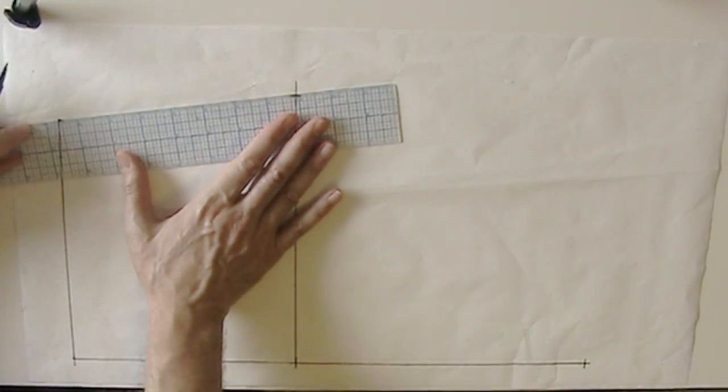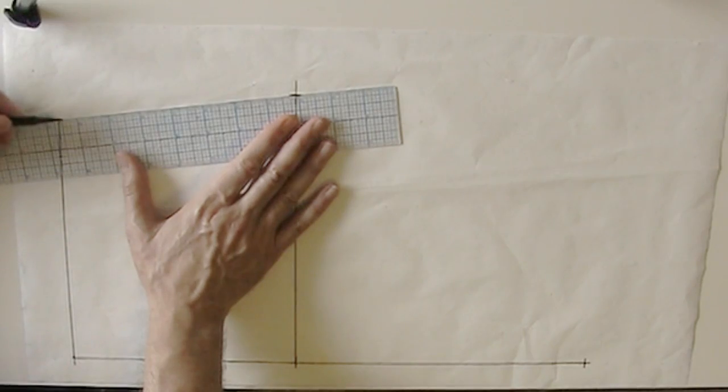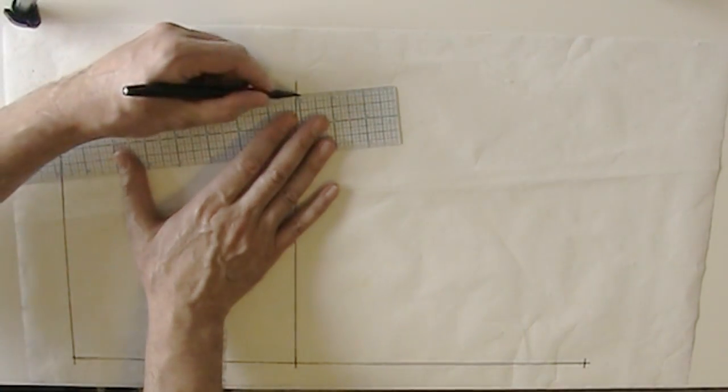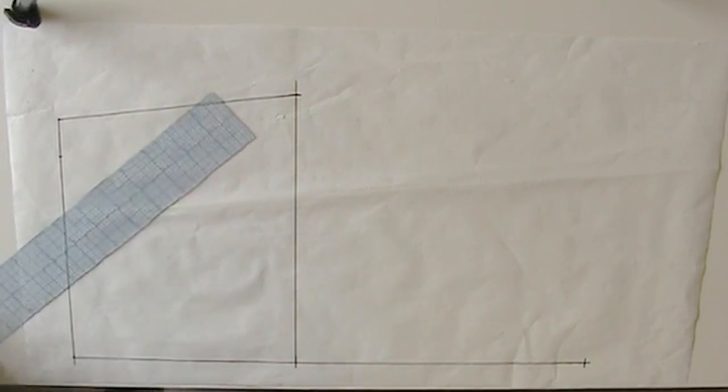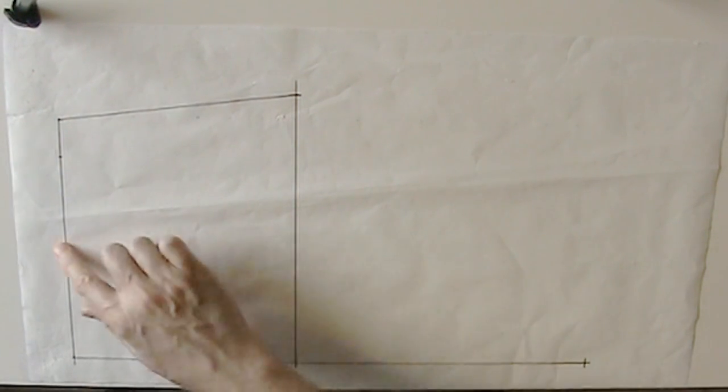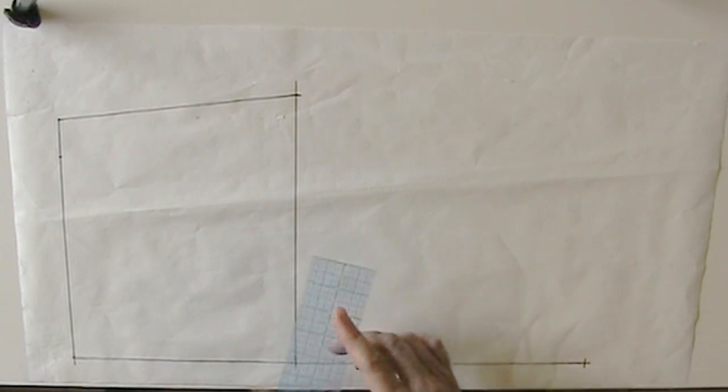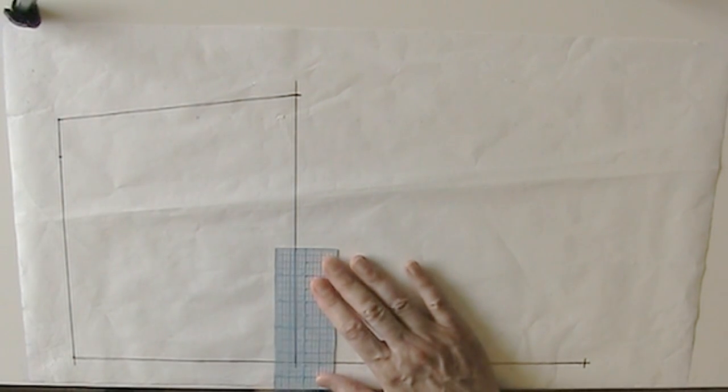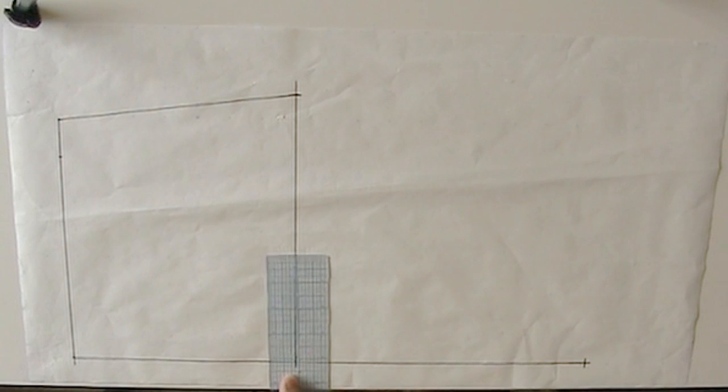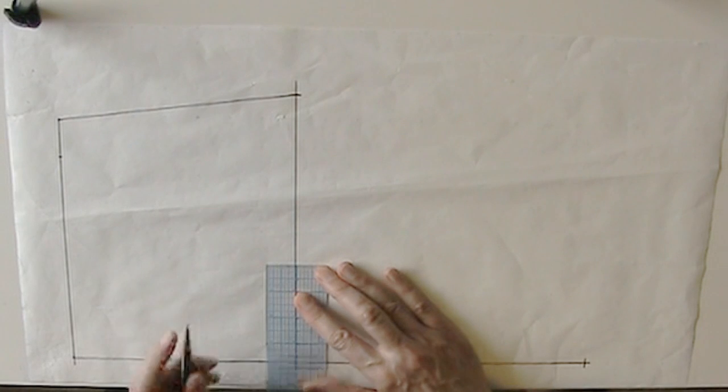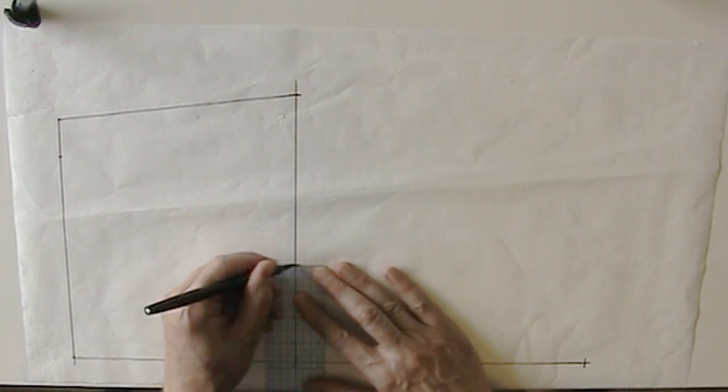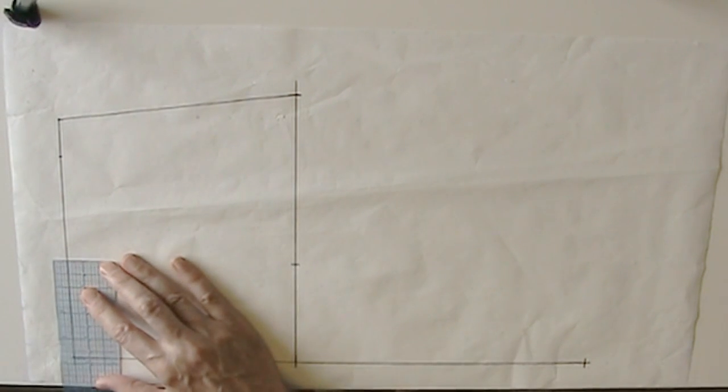Now I can connect the waist to the bust for my side seam. In order to draw in the waist dart, I need to mark my apex point. 7 1/2 between the apex points, so 3 3/4. And I'm going to square a line straight down.